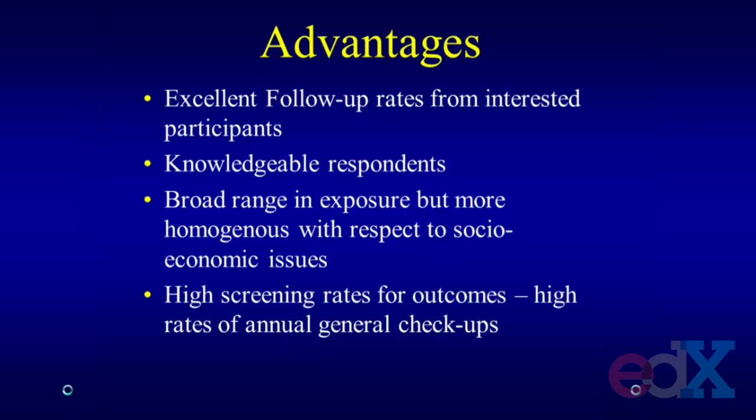Another advantage is that they're knowledgeable in the area of interest — they're knowledgeable respondents. So if we're asking them to self-report hypertension, you don't necessarily need to explain what hypertension is. They know it's high blood pressure. There are many examples where we ask them to self-report medications or other health issues. We would anticipate that the amount of measurement error for reporting both exposure and outcome information would be quite accurate.